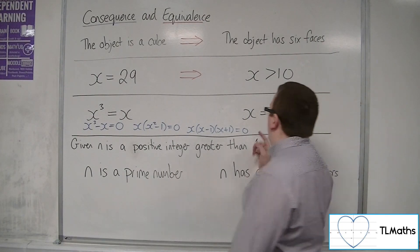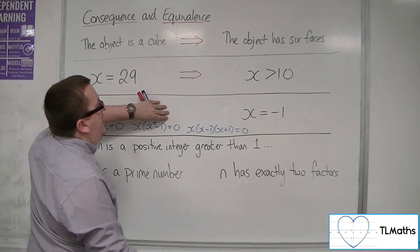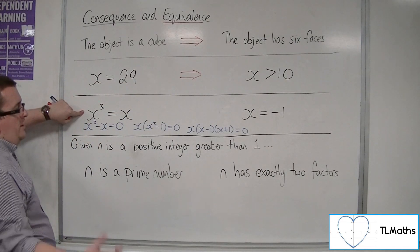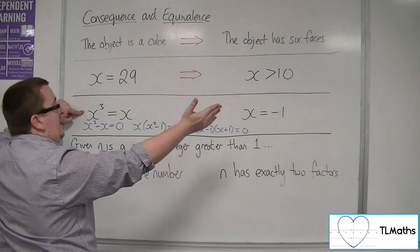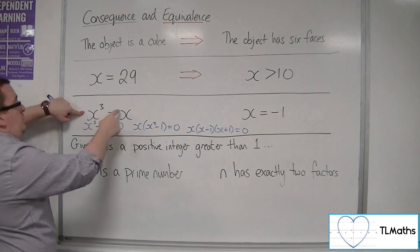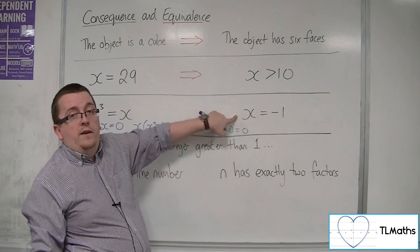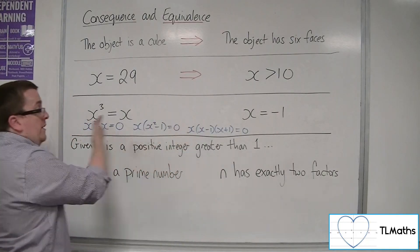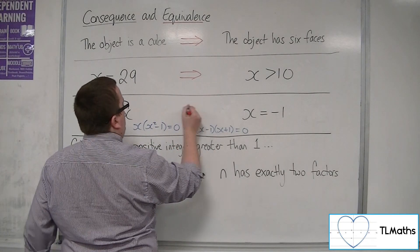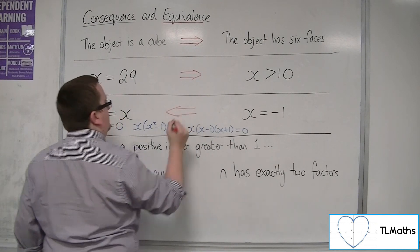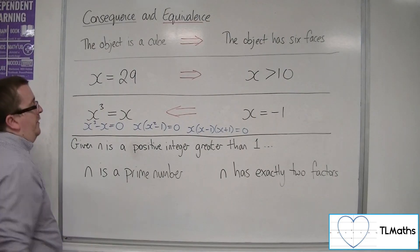However, if we start with X equals minus 1, then if we cube minus 1 we get minus 1, so X cubed equals X is definitely satisfied. It does work from right to left, but it didn't work from left to right. So the arrow points only from right to left this time.